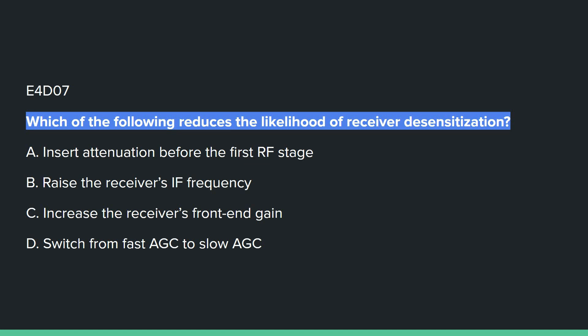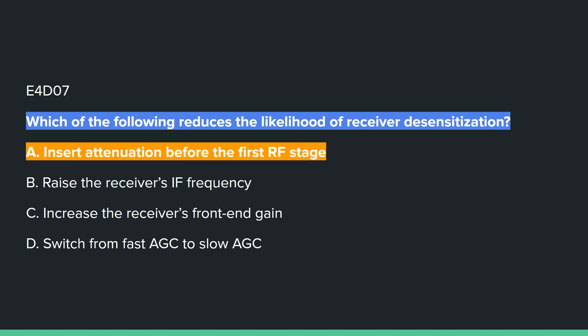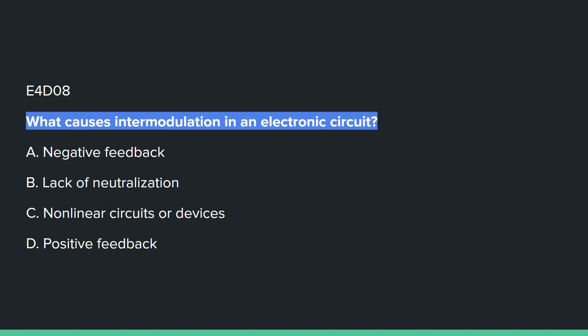E4D07: Which of the following reduces the likelihood of receiver desensitization? Answer A: insert attenuation before the first RF stage.